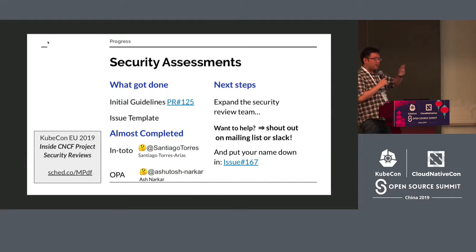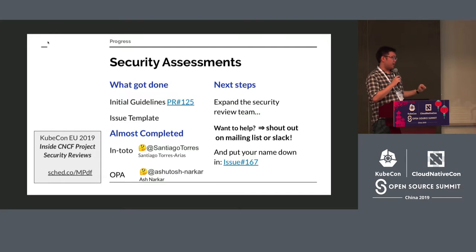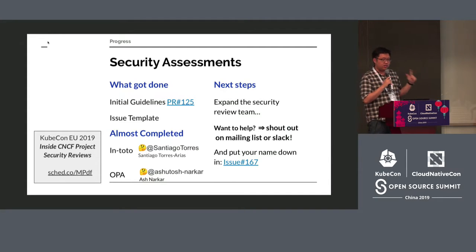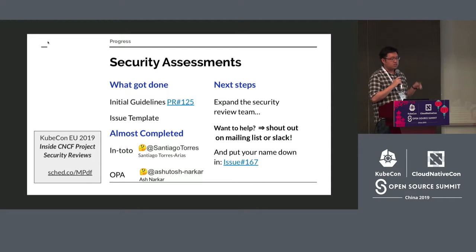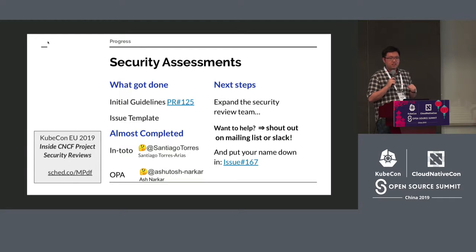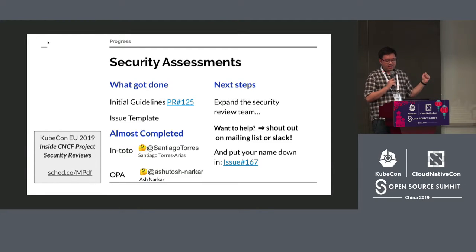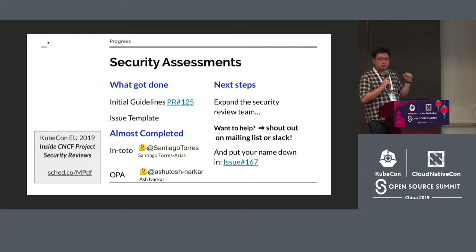We have a couple of security assessments coming up — one on Falco, one on Keycloak, and possibly Harbor. These are the three projects we're looking at next. If you're interested in participating in security assessments, ping us on Slack, give us a shout on the mailing list, and put your name down on the issue.